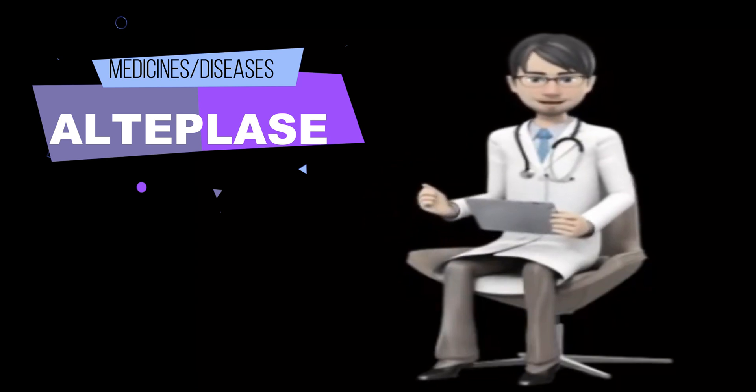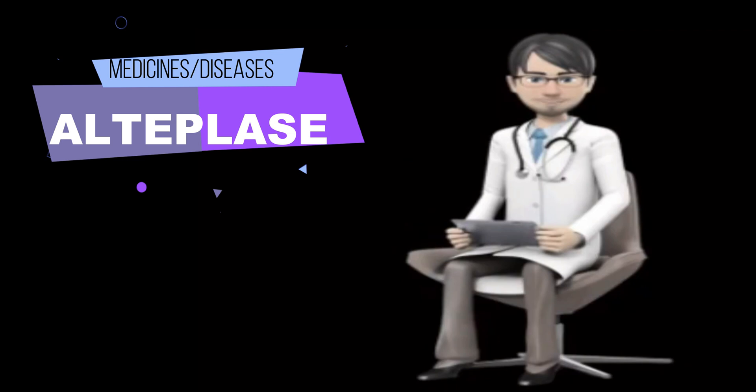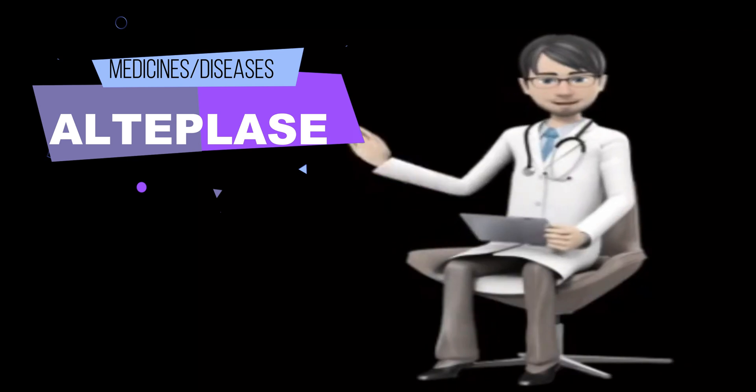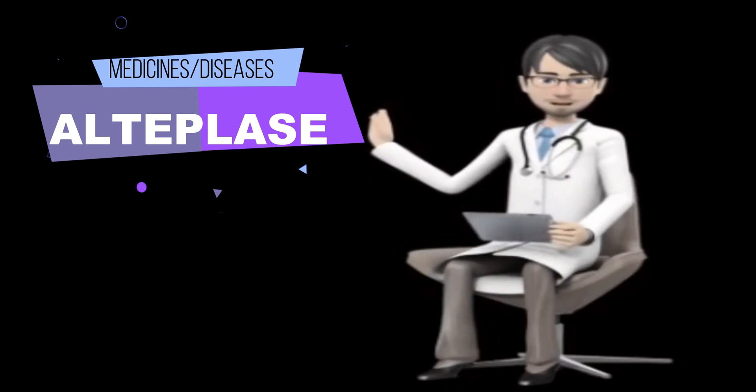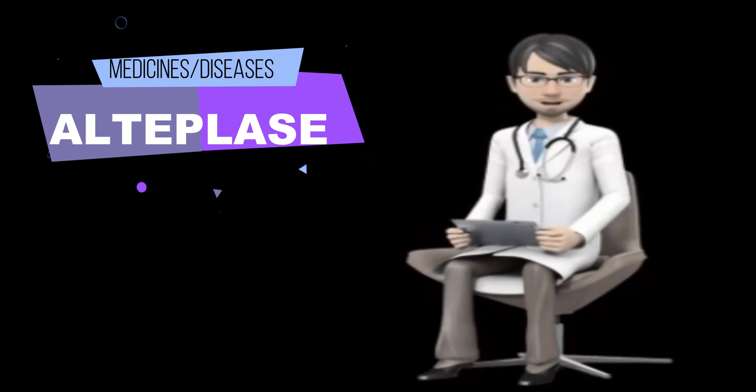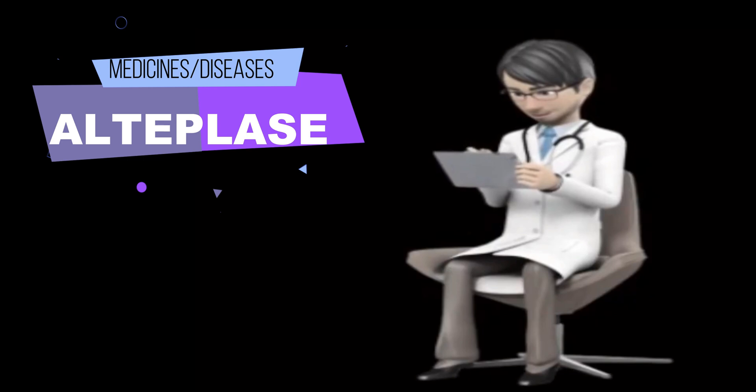When used to clear blood clots from a catheter, Alteplase is given in 1 or 2 doses. Your doctor may prescribe a blood thinner or other medication to help prevent future blood clots. Carefully follow all dosing instructions.